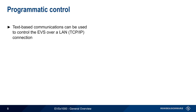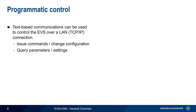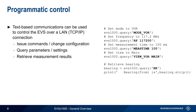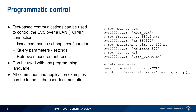Another way to interface to the EVS is through programmatic control — that is, using text-based communications over a TCP/IP connection. This can be used to issue commands or change configuration, query parameters or settings, and retrieve measurement results. For example, the Python programming language could be used to send commands to the EVS to make a VOR measurement at 117.2 MHz, then another command can be sent to retrieve the VOR-derived bearing. Any programming language that supports sockets can be used to control the EVS programmatically. A complete set of all supported commands and examples can be found in the EVS user documentation.